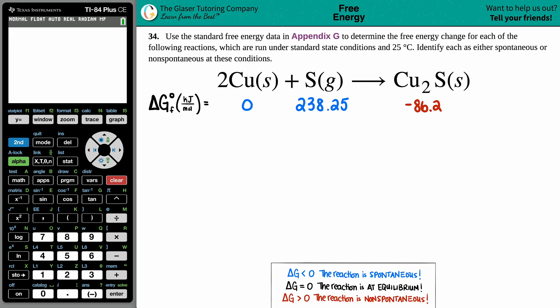Number 34: Use the standard free energy data in Appendix G to determine the free energy change for each of the following reactions, which are run under standard state conditions at 25 degrees Celsius. We have to identify either as spontaneous or non-spontaneous reaction at these conditions. We have 2Cu solid plus S gas yields Cu₂S solid.